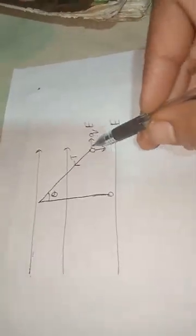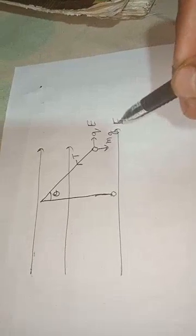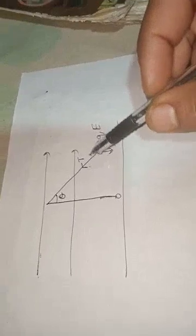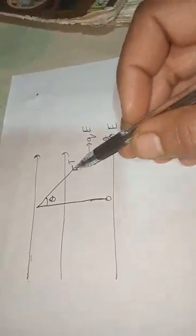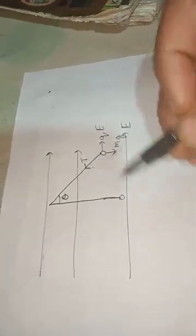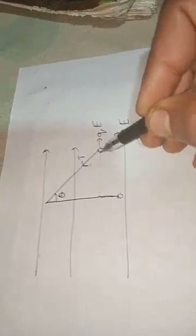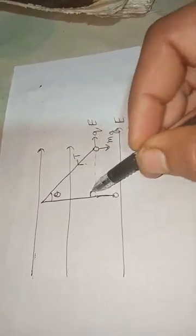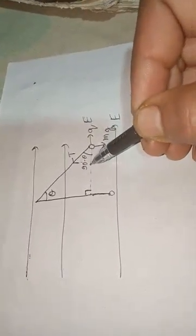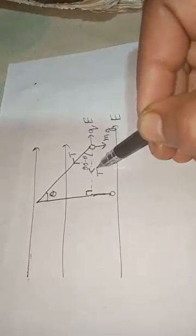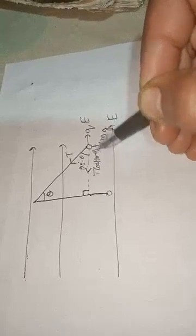We have to resolve these forces along horizontal and vertical directions. QE is already in the horizontal direction and mg is already in the vertical direction. Tension is the only force not purely horizontal or vertical, so we make components of tension. If this angle is theta, then the complementary angle is 90 minus theta, so the horizontal component of tension is T·cos(90−θ) and the vertical component is T·sin(90−θ).